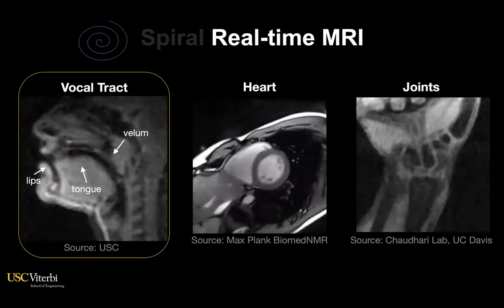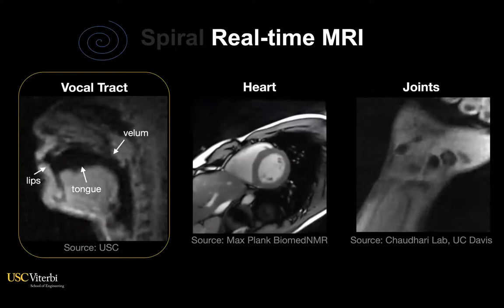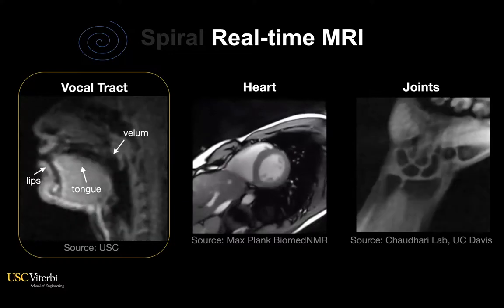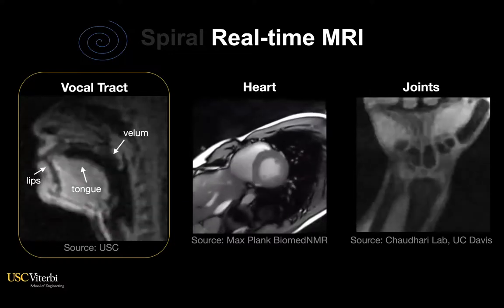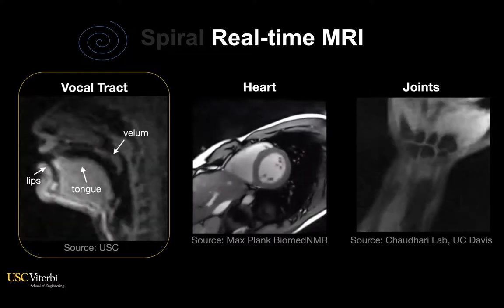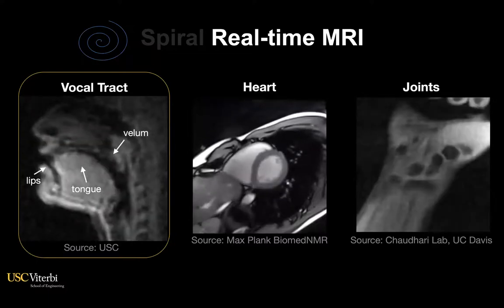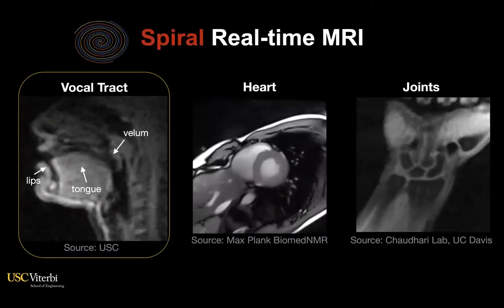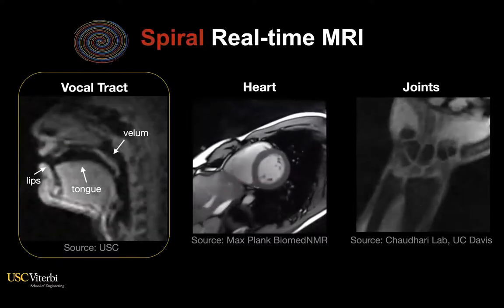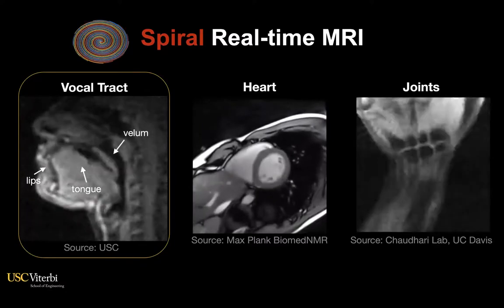For this technique to be able to capture such rapid motion, it is most desirable to keep scan efficiency as high as possible. In this sense, spiral sampling is one of the widely used techniques in this domain.